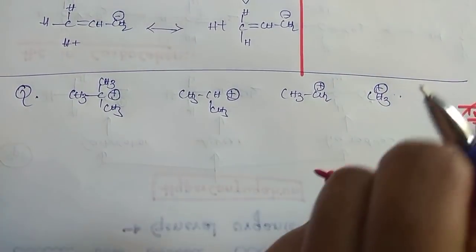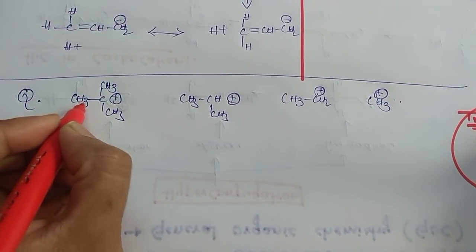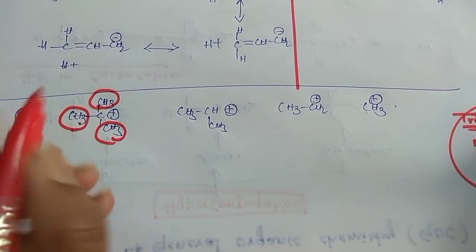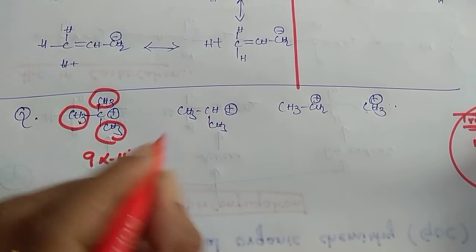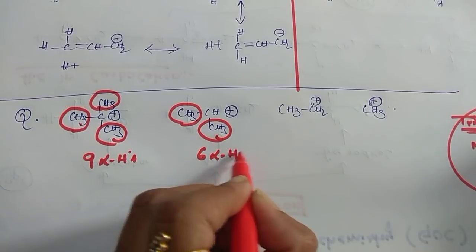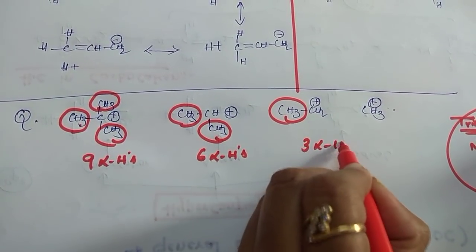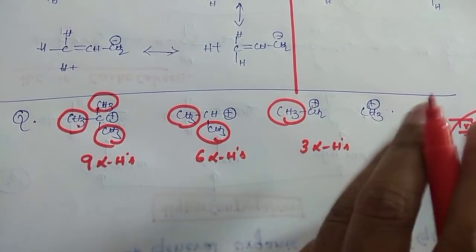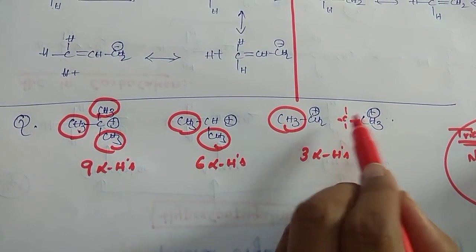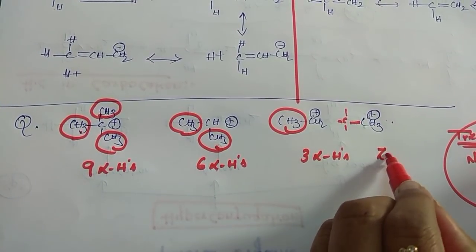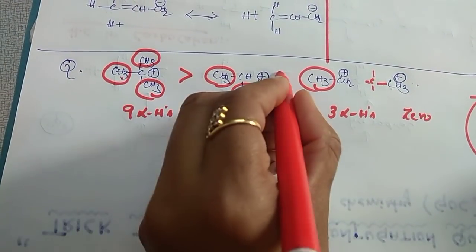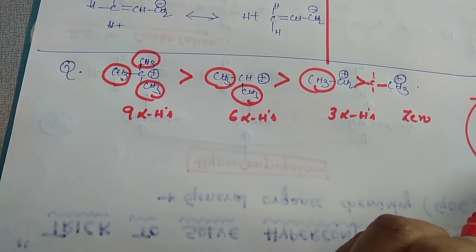In the first structure, there are three alpha carbons each with three hydrogens: 3 + 3 + 3 = 9 alpha hydrogens. In the second, 3 + 3 = 6 alpha hydrogens. In the third, 3 alpha hydrogens. In the fourth — it is a carbocation that needs sp3 carbon connected to it, but it has no sp3 carbon, so zero alpha hydrogens. So the stability order is: structure 1 > structure 2 > structure 3 > structure 4.